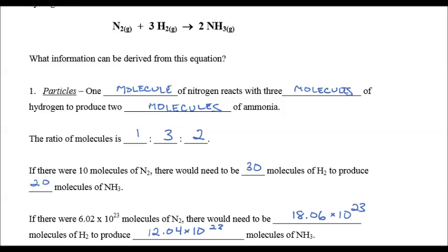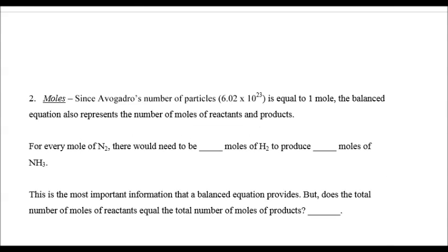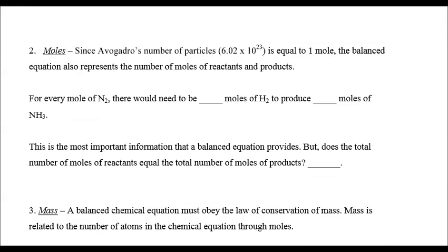Since 6.02 times 10 to the 23rd molecules equals a mole, the balanced equation also represents the number of moles of reactants and products. So for every mole of N2, there would need to be three moles of H2 to produce two moles of NH3. This is the most important information that a balanced equation provides.